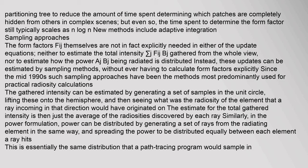Sampling approaches: The form factors F_ij themselves are not in fact explicitly needed in either of the update equations — neither to estimate the total intensity Σ_j F_ij B_j gathered from the whole view, nor to estimate how the power A_j B_j being radiated is distributed. Instead these updates can be estimated by sampling methods without ever having to calculate form factors explicitly. Since the mid-1990s, such sampling approaches have been the methods most predominantly used for practical radiosity calculations. The gathered intensity can be estimated by generating a set of samples in the unit circle, lifting these onto the hemisphere, and then seeing what was the radiosity of the element that a ray incoming in that direction would have originated on.